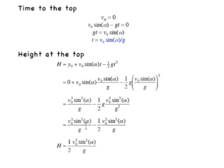Now we have two terms with V0 sine squared alpha over G, just one minus one-half that, so the end result is the height reached is one-half V0 squared sine squared alpha over G.